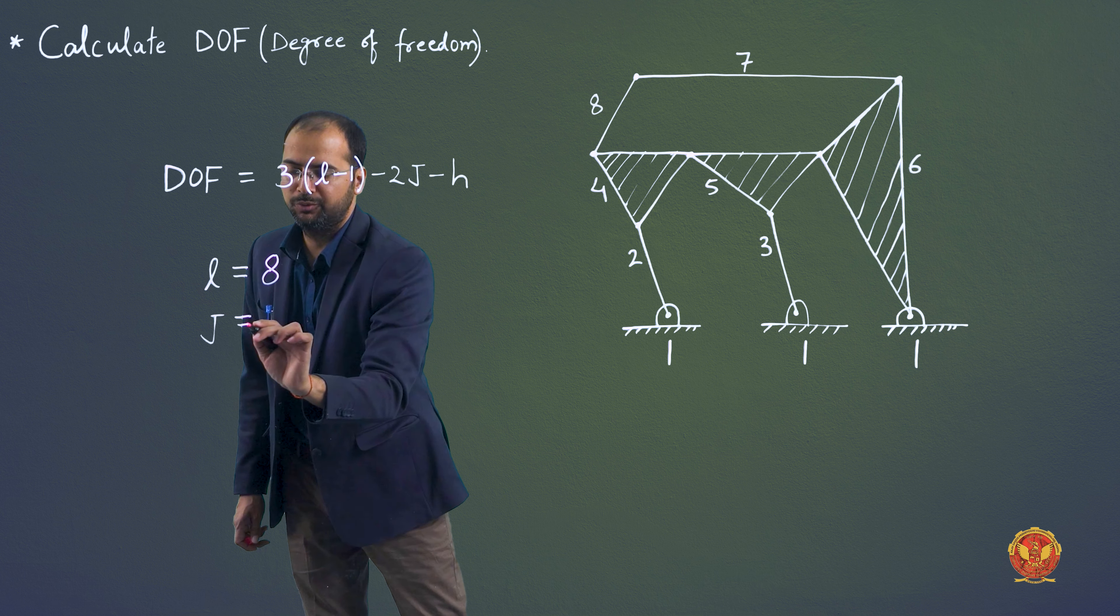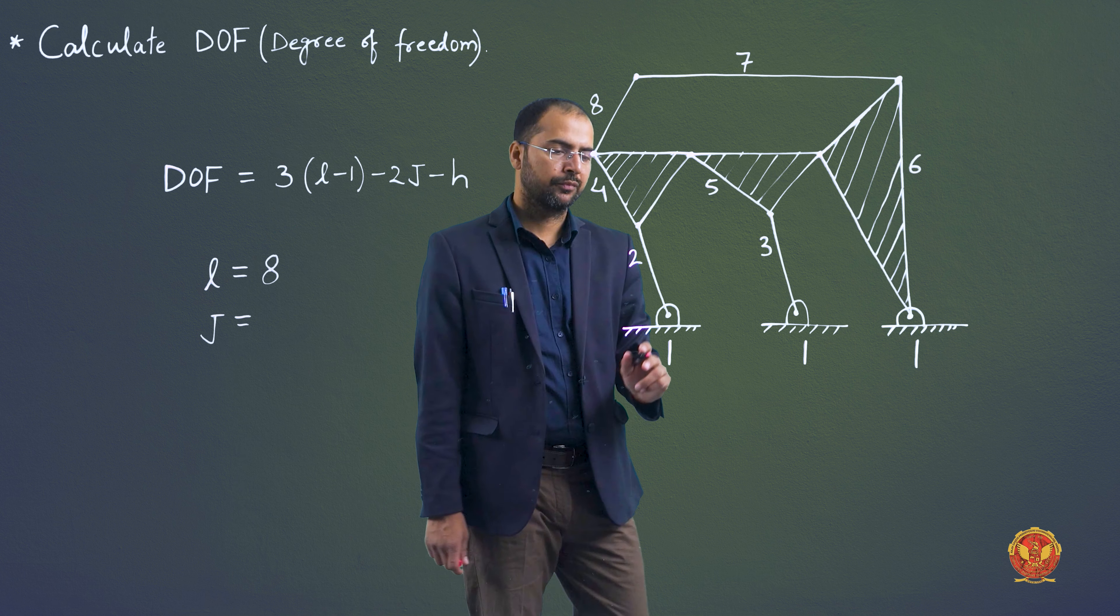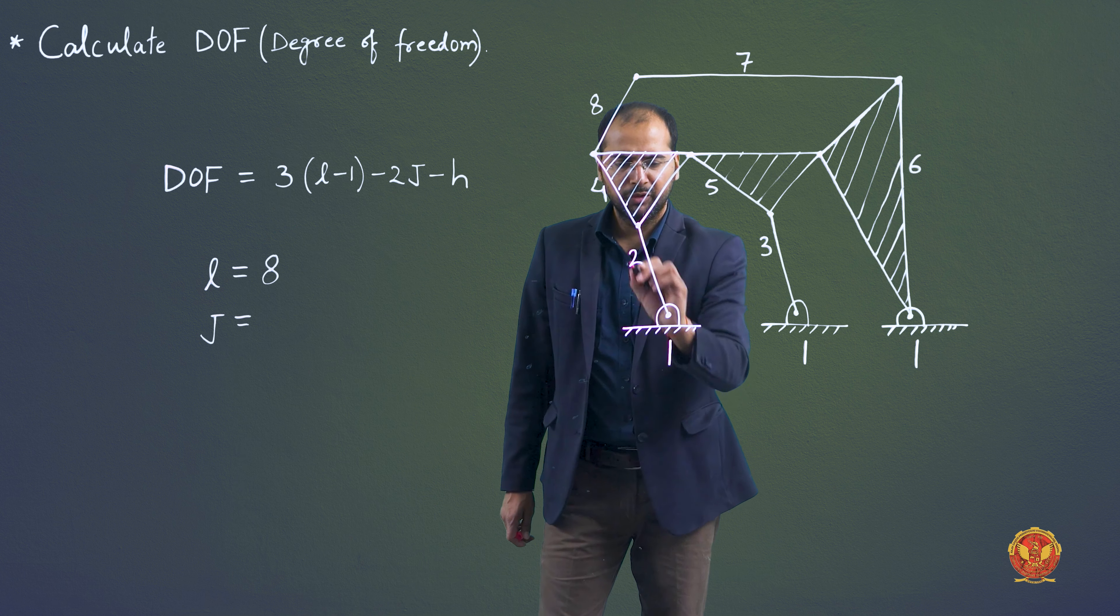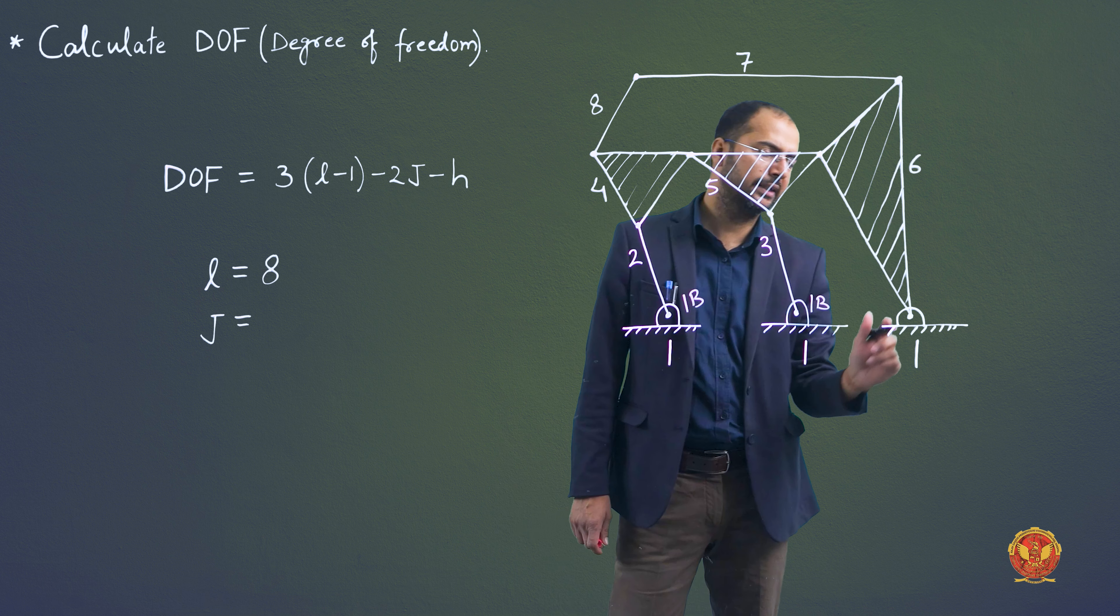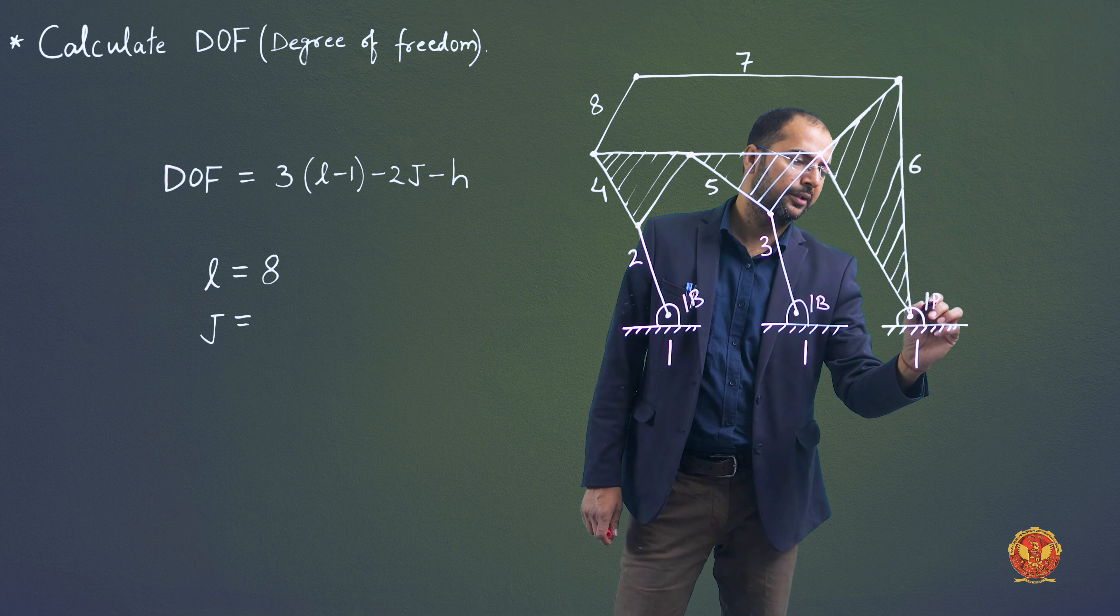Then we will find out the number of binary joints. So between 1 and 2, 1 binary joint. Between 1 and 3, 1 binary joint. Between 1 and 6, 1 binary joint.